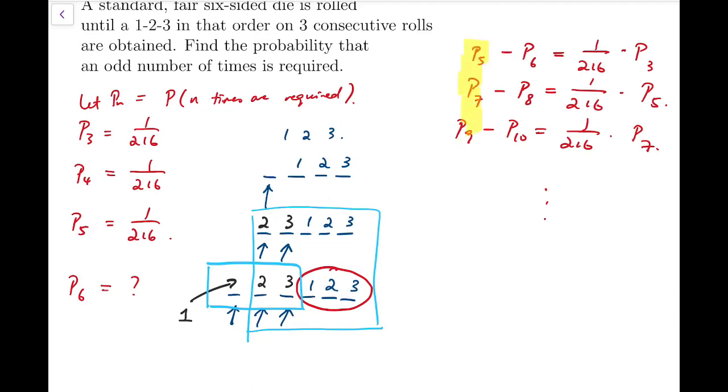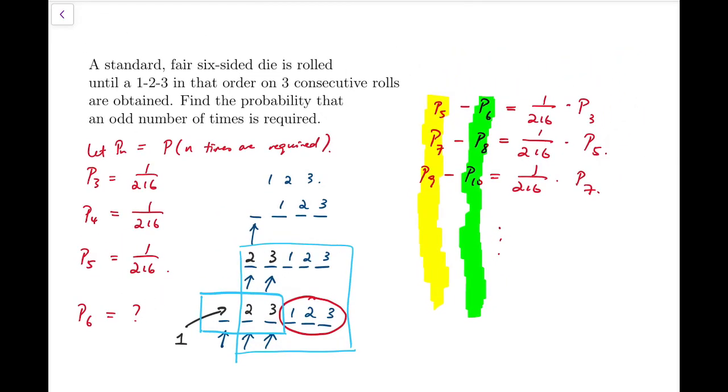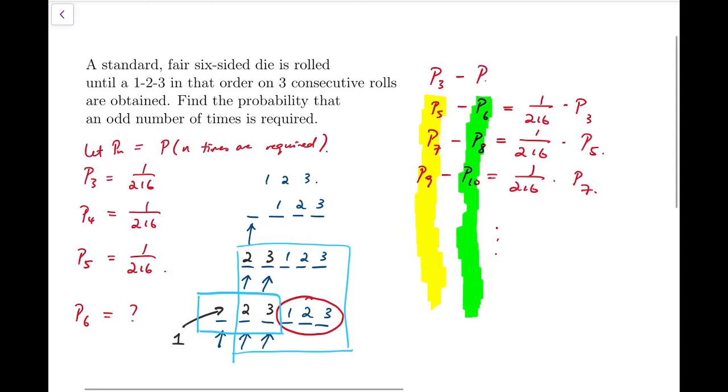Now notice that all of these terms, the first terms under these recurrence relations are cases that odd number of times are required. And the green cases, the second terms in each recurrence relation, are the even cases. So we can actually add them up, together with another similar equation, which is the P_3 minus P_4, so to make the whole thing more complete.